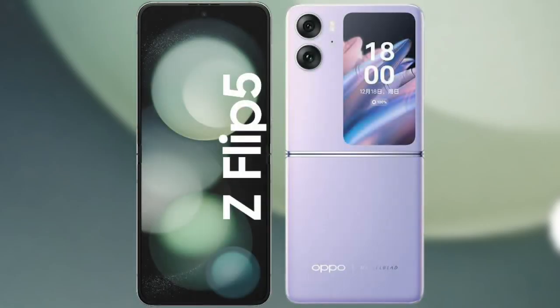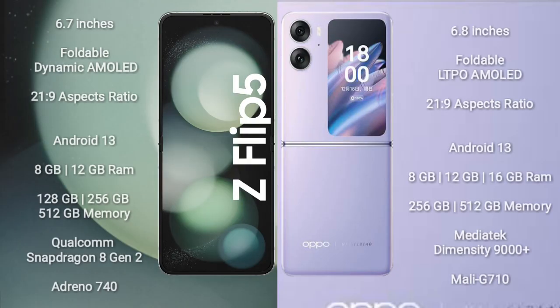I will compare the new Samsung Galaxy Z Flip 5 with the Oppo Find N2 Flip. The Samsung Galaxy Z Flip 5 comes with a 6.7-inch foldable Dynamic AMOLED display with an aspect ratio of 21:9. The Oppo Find N2 Flip comes with a 6.8-inch foldable LTPO AMOLED display, also at 21:9.